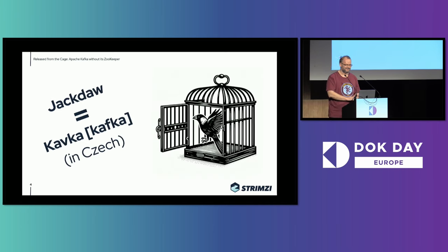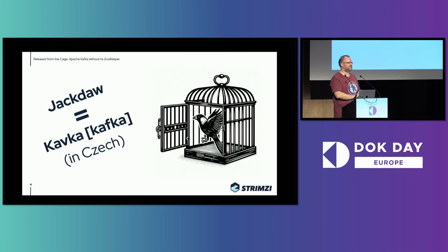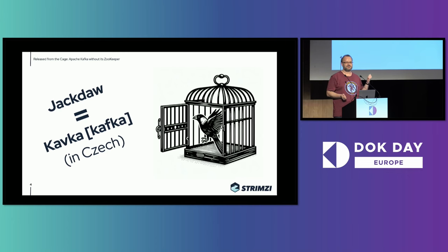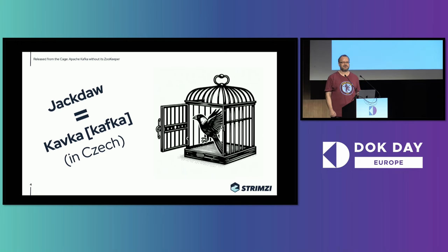Unfortunately it doesn't really allow us to stop working on the ZooKeeper removal and just enjoy our rest, so we have to finish that. If you've ever run Apache Kafka, you probably know that for a very long time it always depended on Apache ZooKeeper. You had to first start the ZooKeeper cluster, get it running, know how to deploy and operate it. And only then you could actually run Kafka, because it was using ZooKeeper for storing metadata, for bootstrapping the cluster, for electing the Kafka controller and all these things. But that's now changing — ZooKeeper is going away.